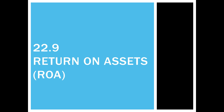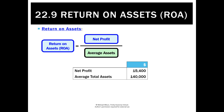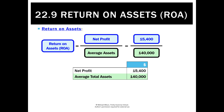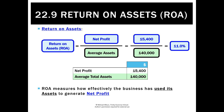Another measure of profitability is return on assets, or ROA, which is simply calculated as net profit over average assets. In this case, we've got a net profit of $15,400 and an average total assets of $140,000. To get average assets, we take the balance of the assets at the start of the period and the balance at the end, and just take the average of those two numbers.